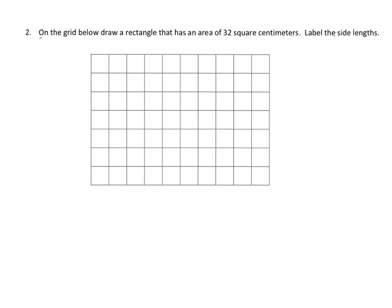And this question says, on the grid below, draw a rectangle that has an area of 36 square centimeters, label the side length. So that means we know our rectangle is something by something, and that has to have 32 square centimeters. So we don't know what the side lengths are, but we know that when we multiply them, we should get 32.